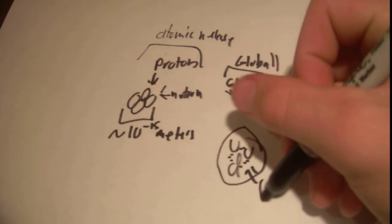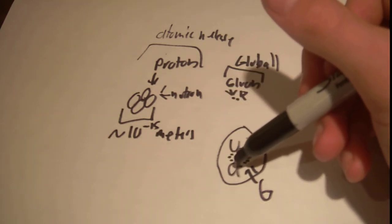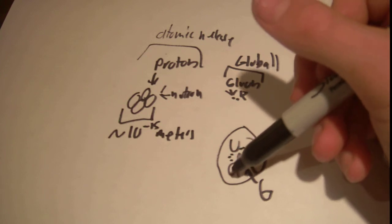All right? These would be gluons. So gluons hold the quarks together in hadrons, including mesons as well, not just baryons.